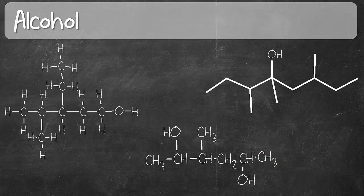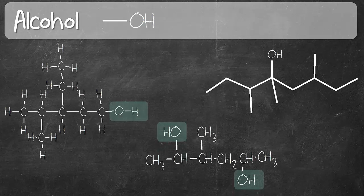We'll start with the first group in this series which is alcohol. Alcohol has a hydroxyl group which is OH. In recognizing alcohol, you look for the presence of OH in the structure. So the first structure, we have OH right here, and in the second structure we actually have two OHs, and in the third structure there's one OH right there.